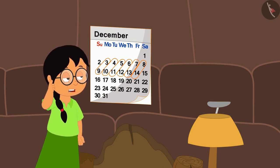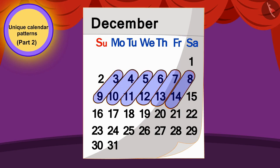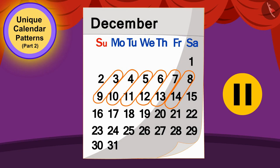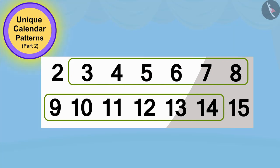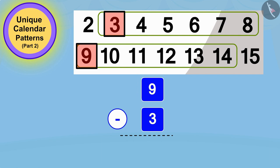Children, do you see a pattern in the groups of these diagonal numbers? If you wish, you can stop the video and think of the answer. If we look closely, we will find that there is a pattern in these diagonal numbers. Let's see — first we will look at the group of 3 and 9.